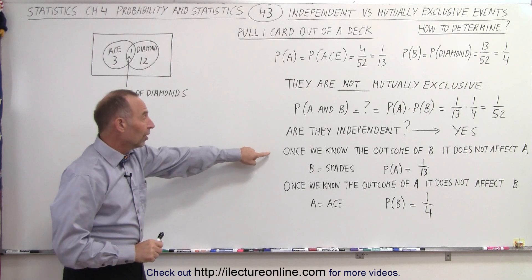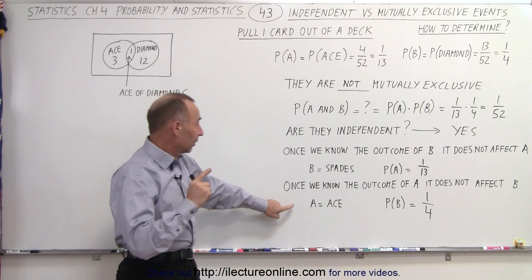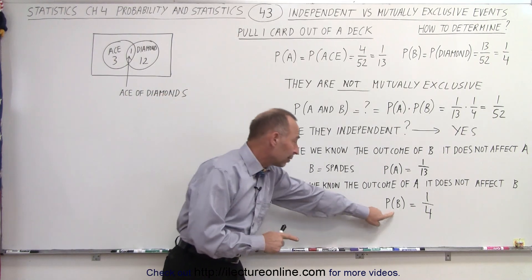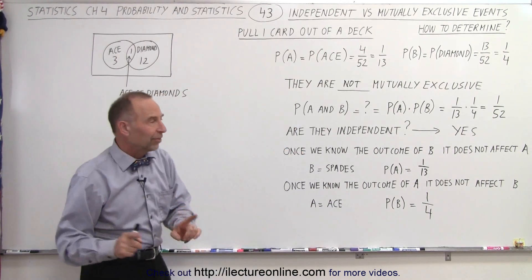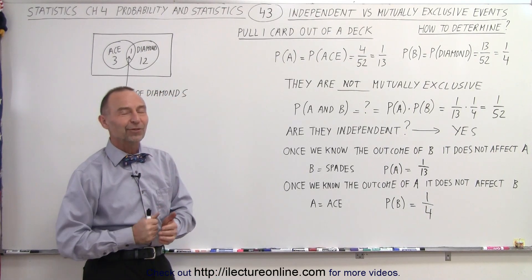So you can see since knowing what happened to B does not affect the probability of A, and knowing once we know A, it does not affect the probability of B. Therefore, we can say that both of these events are indeed independent. And that is how it's done.